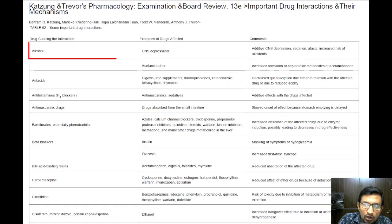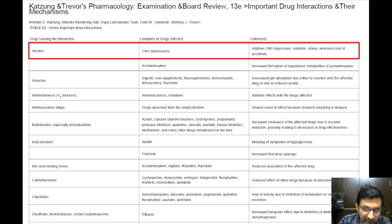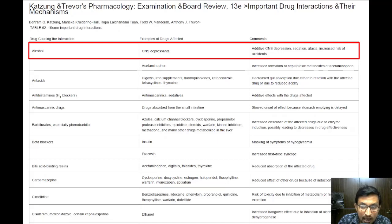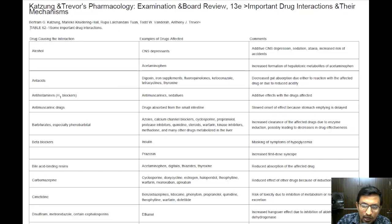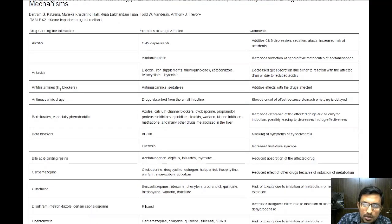Firstly, the interaction between alcohol and other drugs is particularly noteworthy. Alcohol can dangerously enhance the effects of central nervous system depressants. When you take alcohol along with drugs that also depress your CNS, such as sedatives, the combined effect can lead to increased sedation, impaired motor control known as ataxia, and a heightened risk of accidents. Additionally, when alcohol is taken with acetaminophen, commonly known as Tylenol, it can lead to the formation of toxic substances in the liver, potentially causing liver damage.